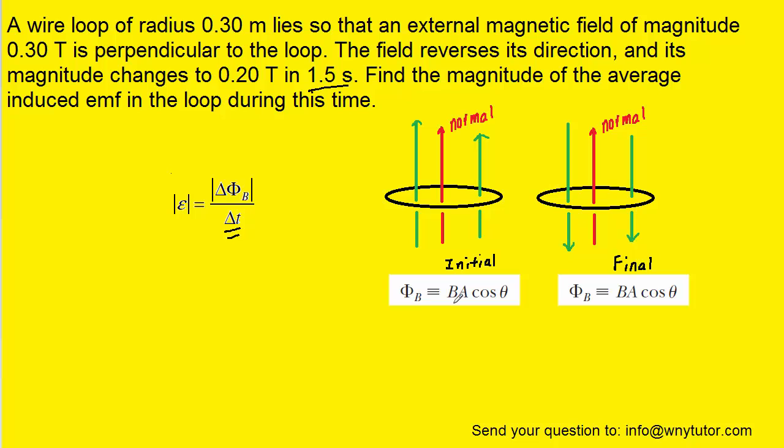We know that flux is equal to the magnetic field multiplied by the area of the loop times the cosine of an angle. The angle will be between the normal, which is this imaginary line that projects through the center of the loop that is perpendicular to the loop, and the magnetic field. So again, the angle is between the normal and the magnetic field.